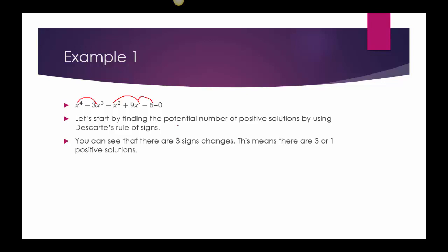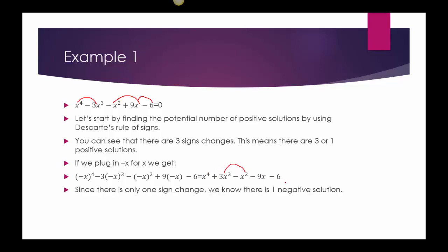Remember, we're always going to drop down by two using Descartes' rule of signs. So let's talk about negative solutions, which means I need to plug in negative x. When I do that, I put parentheses in so I don't get confused with my signs. After expanding, I have x to the fourth plus 3x cubed minus x squared minus 9x minus 6. So I go positive, positive, negative — there's a sign change — but then negative, negative. So here I only have one negative sign change, which means I only have one negative solution.